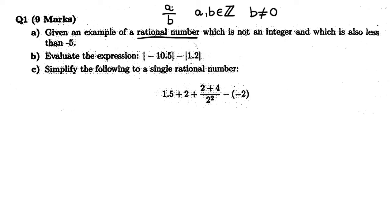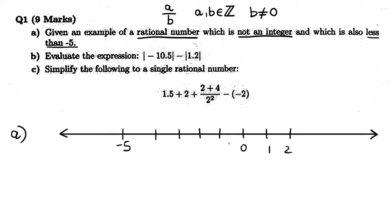How can we find a rational number which is not an integer and is less than negative 5? Well, I think maybe sometimes a picture is helpful. If we draw a picture here, negative 5 is here, negative 4, negative 3, negative 2, negative 1, 0, 1, 2, etc. So this would be negative 6. We want some number that's down here somewhere below negative 5.